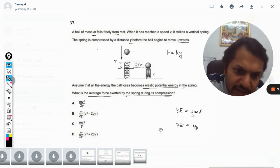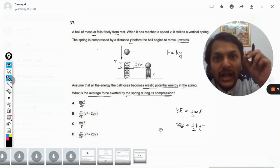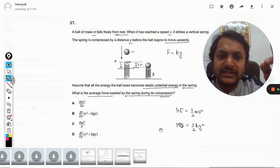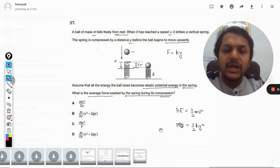Now what is the potential energy of the spring? It will be half ky squared. But along with it, there is one more energy that is given from the ball to the spring, and that is the potential energy.